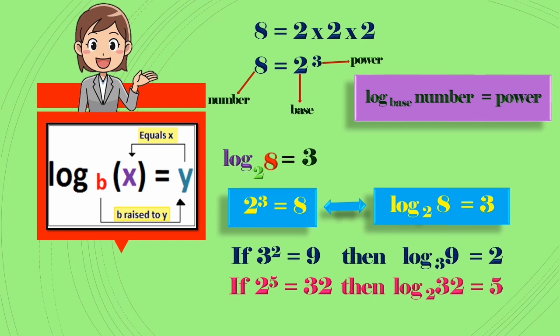If 2^5 = 32, then log₂32 = 5. If 7^2 = 49, then log₇49 = 2.